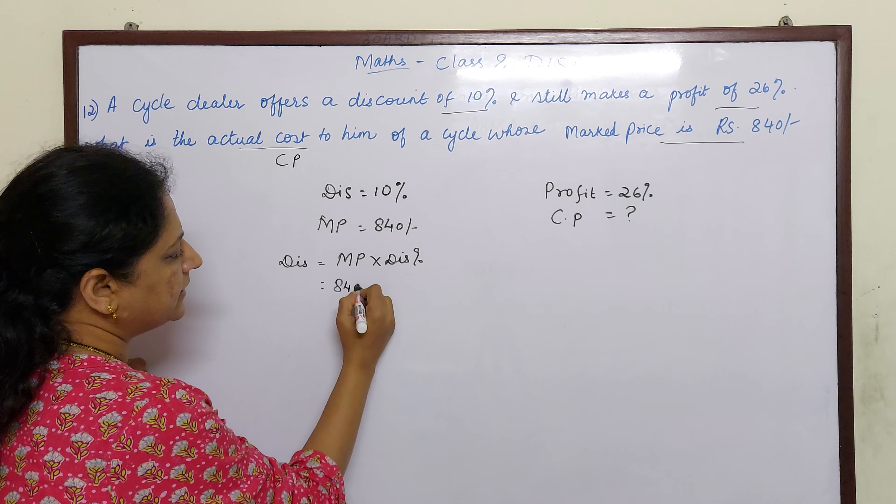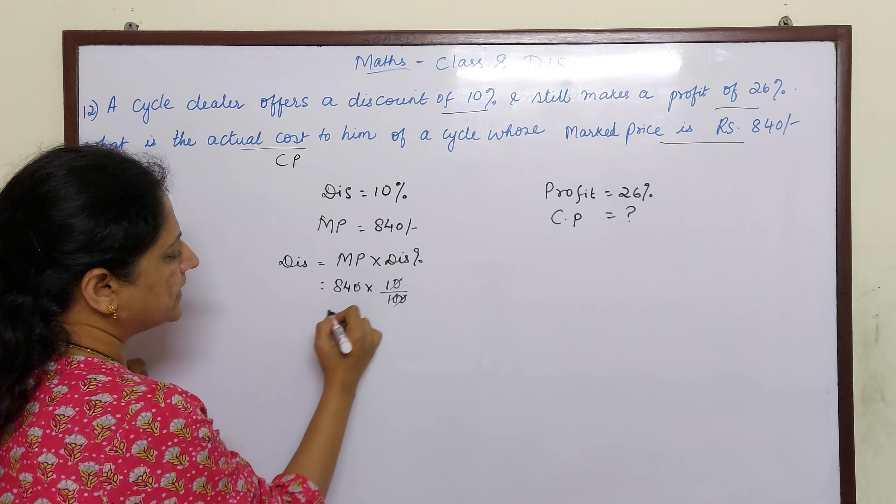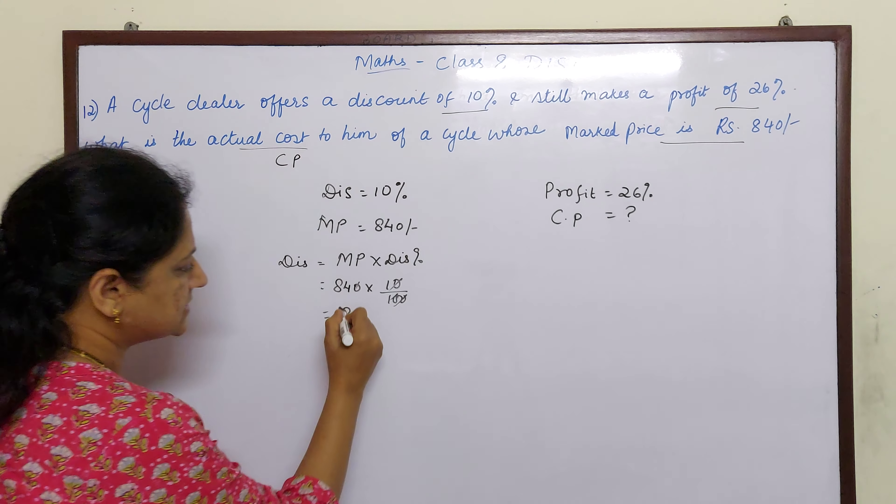What is marked price? 840 into discount percentage is 10 by 100. So if I do the cancellation I will get 84 rupees. So this is the discount.